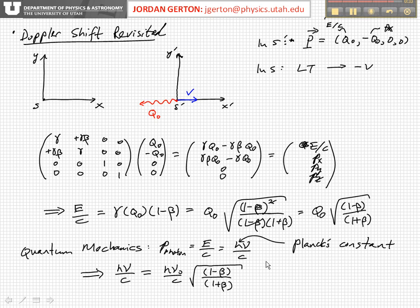So later on in quantum mechanics, in a few weeks, we'll learn that the momentum of a photon is equal to E over C is equal to H nu over C. H is Planck's constant. Nu is just the frequency of the photon. And so if we plug that in to what we wrote down here,